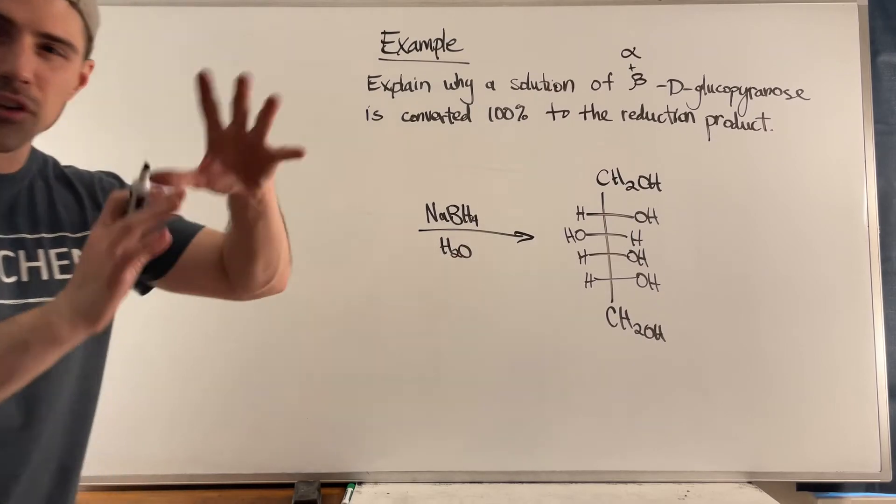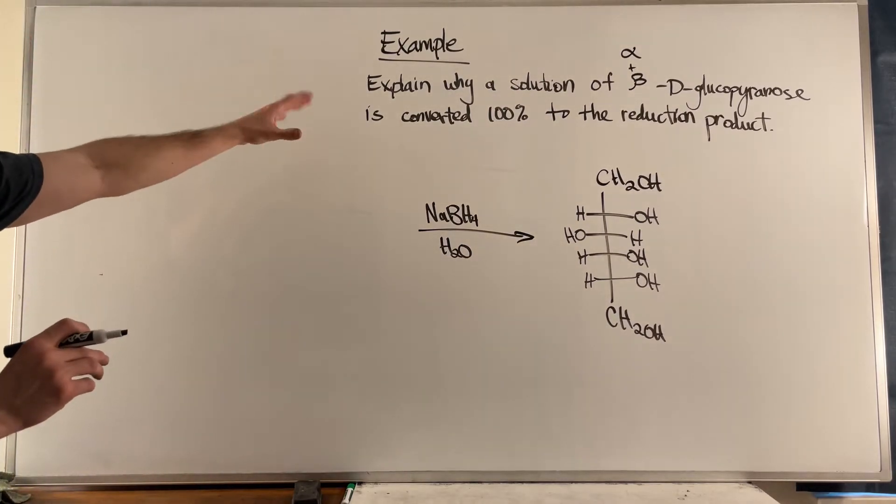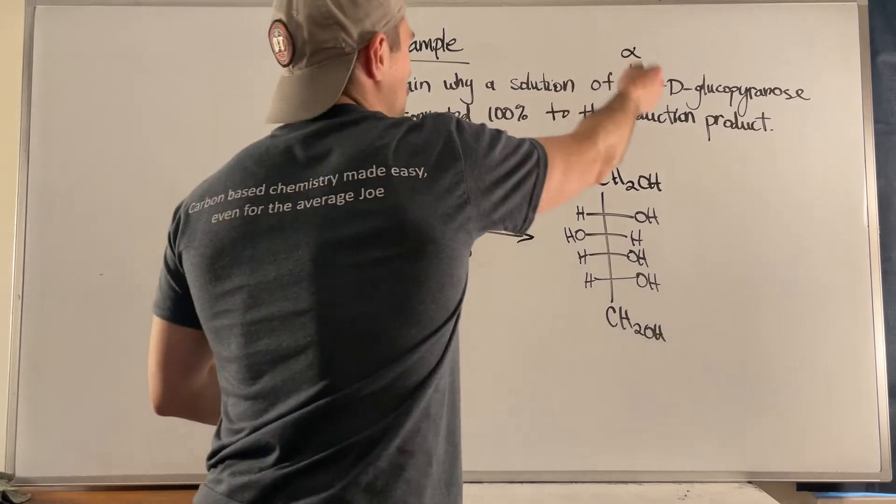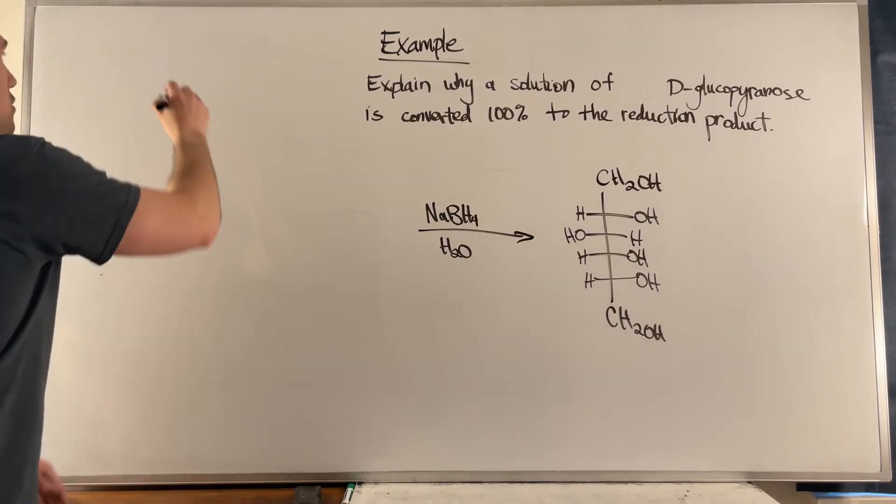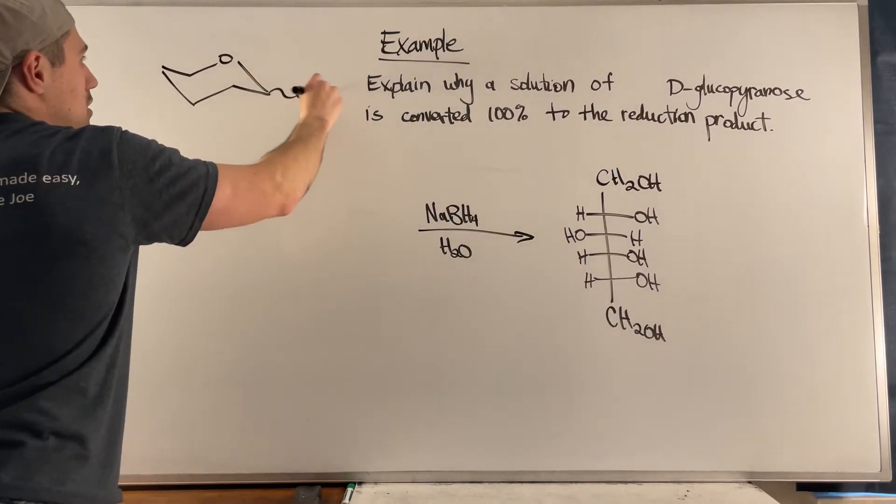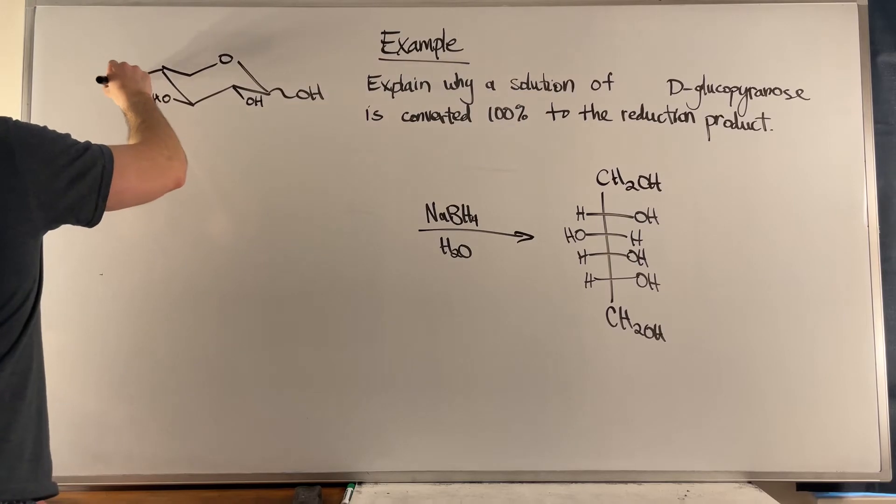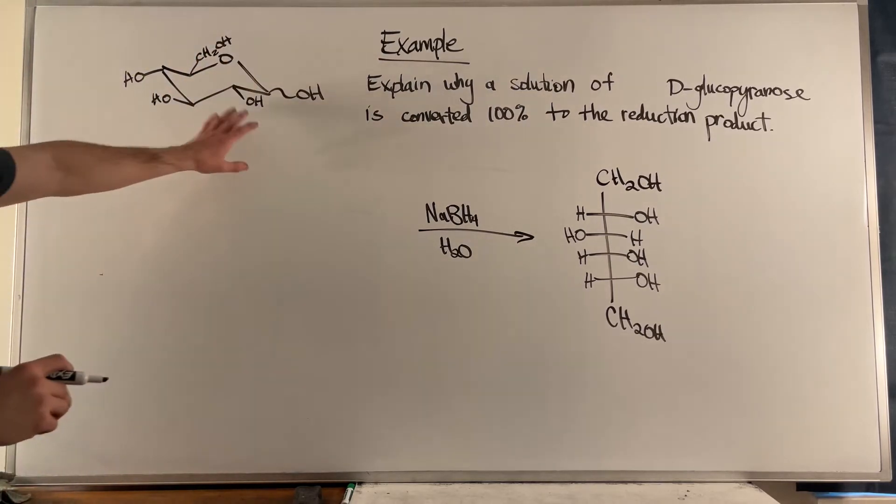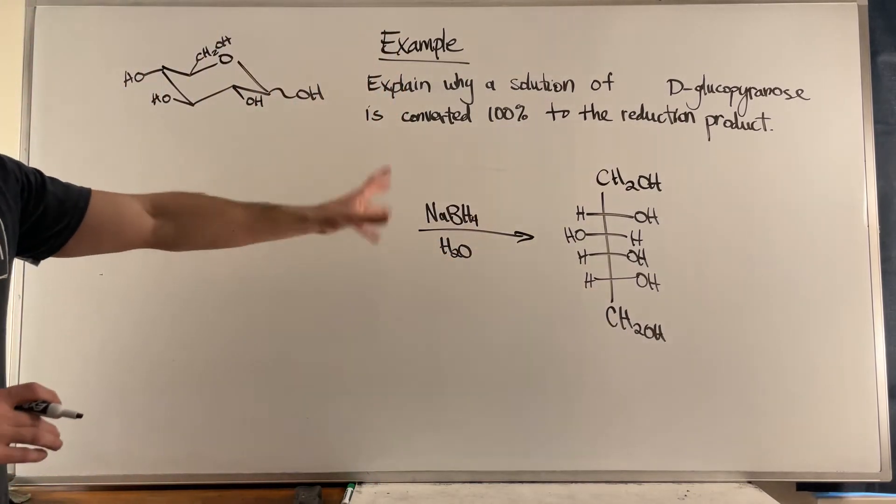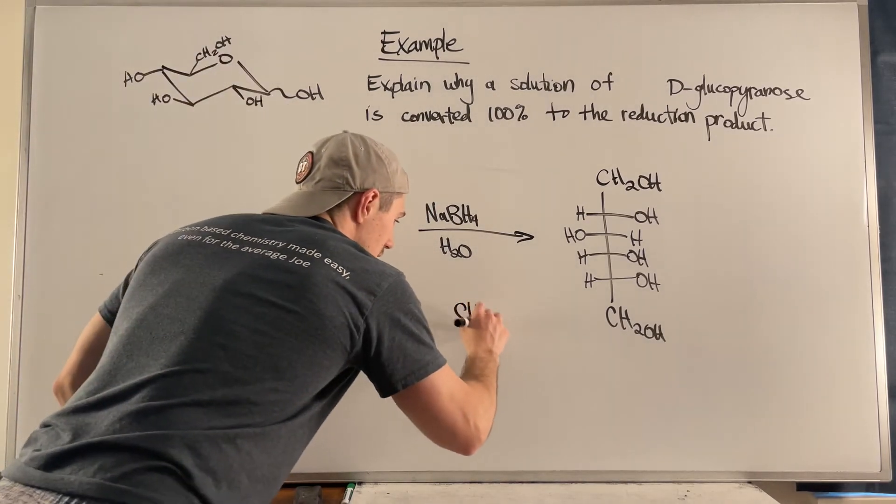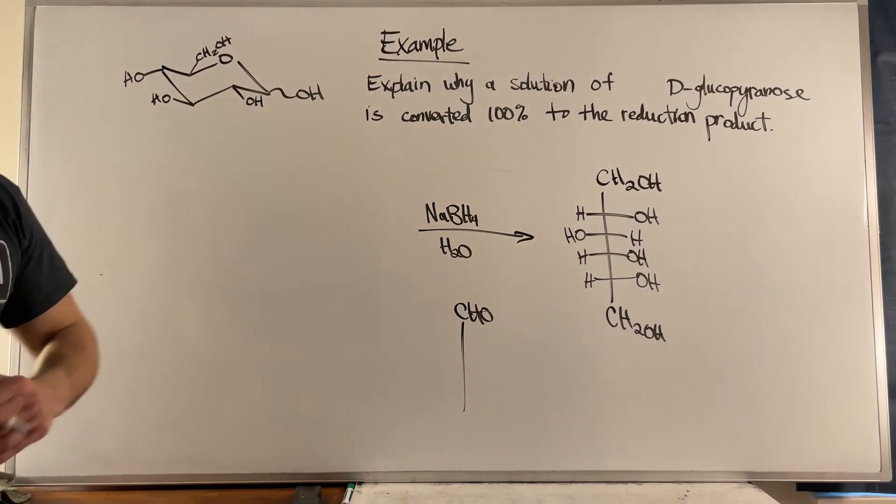Okay gang, to close this video out we have one concept question which relates to not only just reduction but oxidation as well. The question is: explain why a solution of, I guess I could have just said D-glucopyranose, which is this. I'll just leave the anomeric position ambiguous, but it being D-glucose means it is the all equatorial sugar, so I know this is what I am dealing with. Explain why a solution of this is converted 100% to this reduction product that we see there, which looks like D-glucose except instead of having the aldehyde at the top we have the alcohol, which makes sense because we have our NaBH₄ and water work up right there.